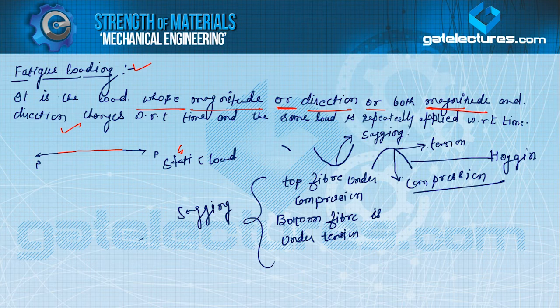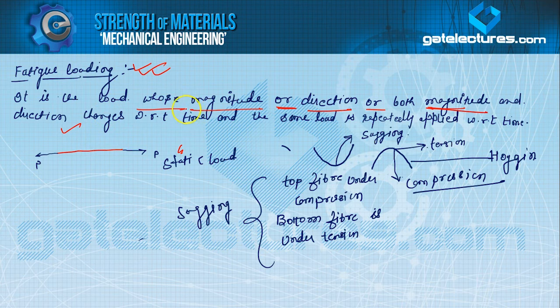The pulley's weight W acts downward, so the shaft is under bending. If the shaft is static, the upper fiber is in compression. But as the shaft starts rotating, the upper fiber moves downward and goes into tension — that is the fatigue loading condition. For any member under fatigue loading, failure stress analysis is done in machine design when we study design against fatigue loading, where you encounter a new term: endurance limit.